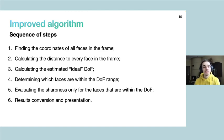We started with identifying the steps for the improved algorithm, which are first finding all the faces in the frame, then performing calculations to determine which of these faces should be evaluated for sharpness and which should be ignored, and then proceeding to calculate the sharpness and present the result.